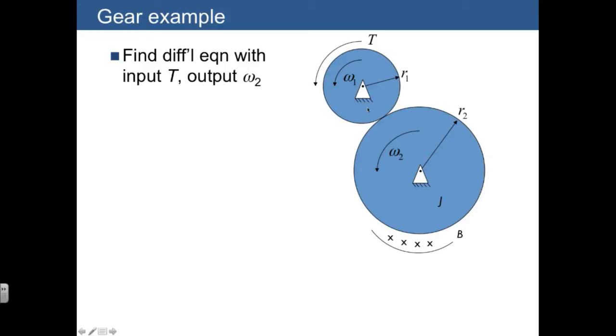And I want to emphasize that on the first one, omega-1, there's no inertia shown. And so if it's not shown, you can just assume it's going to be zero, whereas for the lower gear we do have an inertia J. Our job is to find the differential equation with input torque T and output omega-2.